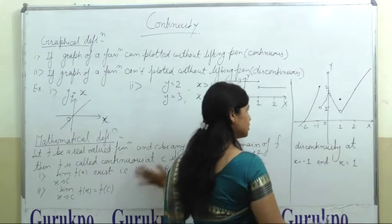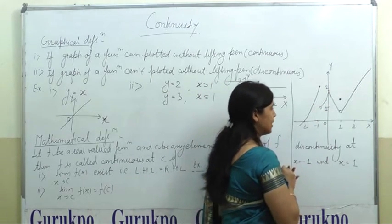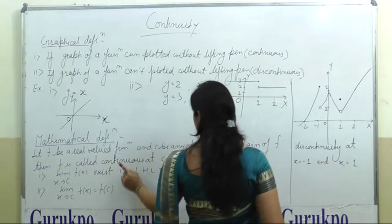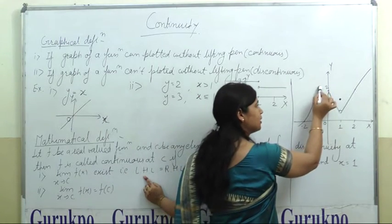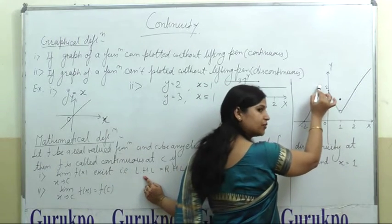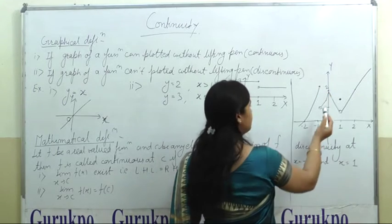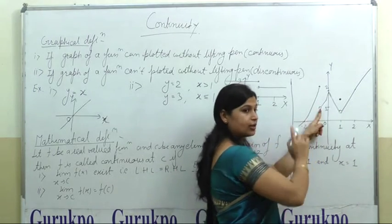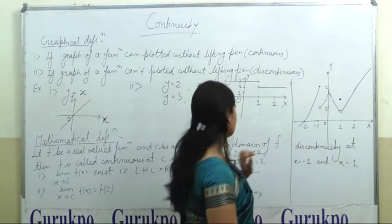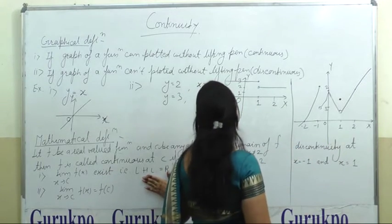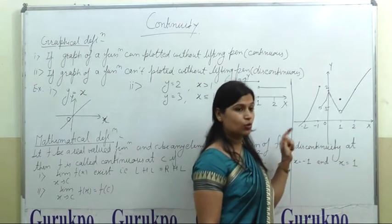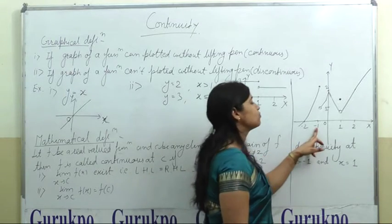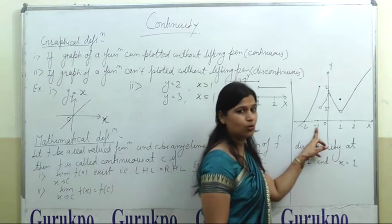Now the mathematical definition. At x equals minus 1, the left-hand limit is 2.5 and the right-hand limit is 1. That means at x equals minus 1, the right-hand limit and left-hand limit are not equal. Therefore at the point x equals minus 1, the function is not continuous.